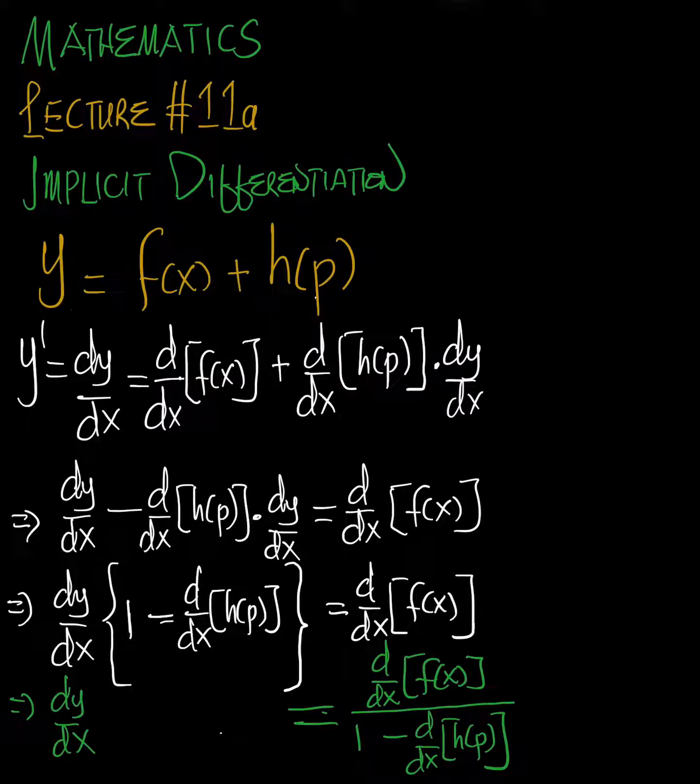We have two different functions here: y equals f(x) plus h(p). Now h(p) is different—it's not in terms of x. What do we do?